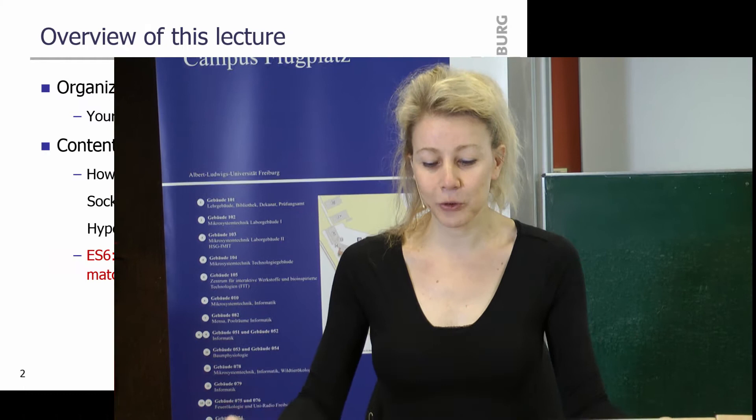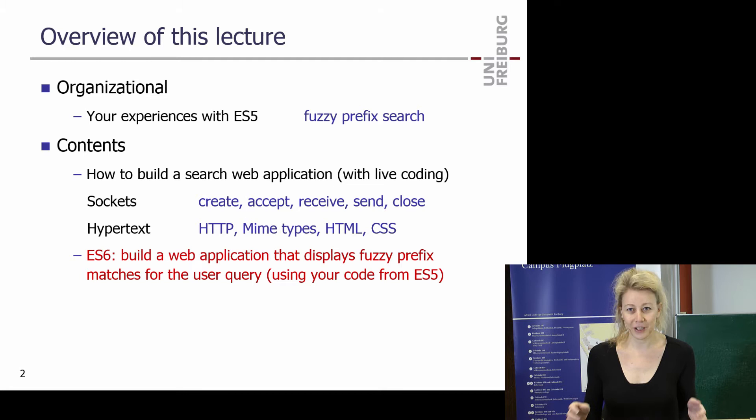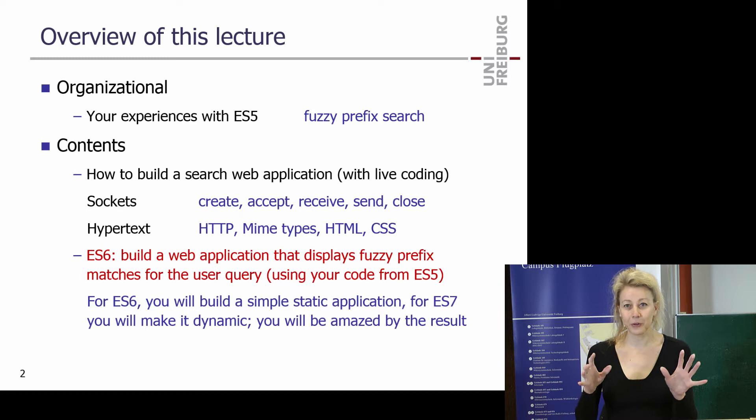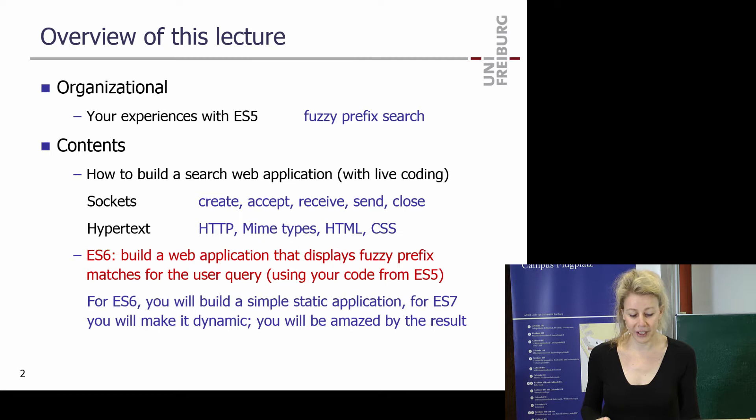The exercise will be to build a web application on top of what you've already done for the last exercise sheet. You've basically built a command line tool where you type something, press return, and get hits. Now you do that in the browser using sockets and hypertext. It's split into two parts so that you don't have so much work — a static web application for this sheet, then next week you make it dynamic using JavaScript.